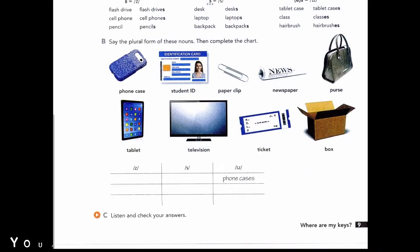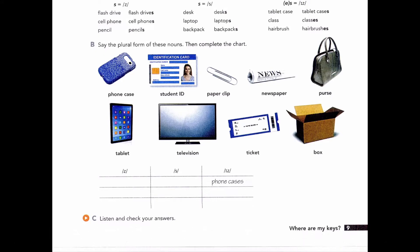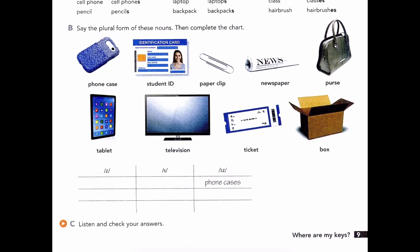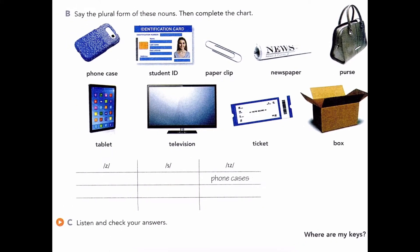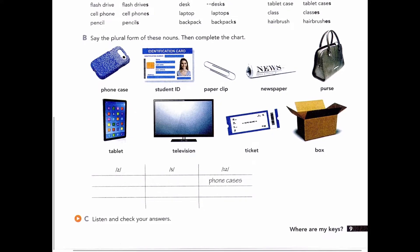Page 9, Exercise 4, Part C: Listen and check your answers. Student IDs, newspapers, televisions, paper clips, tablets, tickets, phone cases, purses, boxes.